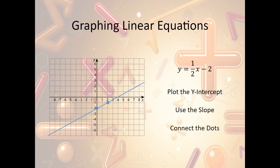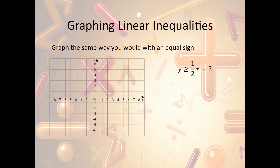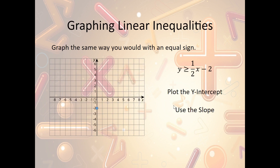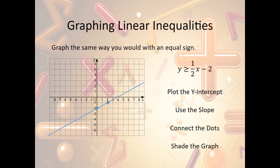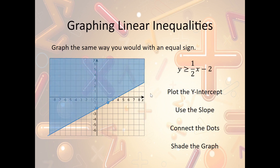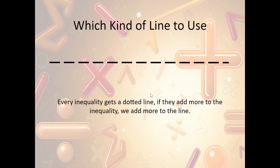Now how does this apply to inequalities? We're going to graph them the same way. We plot the y-intercept at negative 2, go down 2, then use the slope to go up 1 to the right 2, plot the point, and connect the dots. The difference is we're going to shade where the y values are bigger than the line. Looking along the y-axis where the line crosses, we want all y's that are bigger — they're all up above the line — so we shade that area above the line.